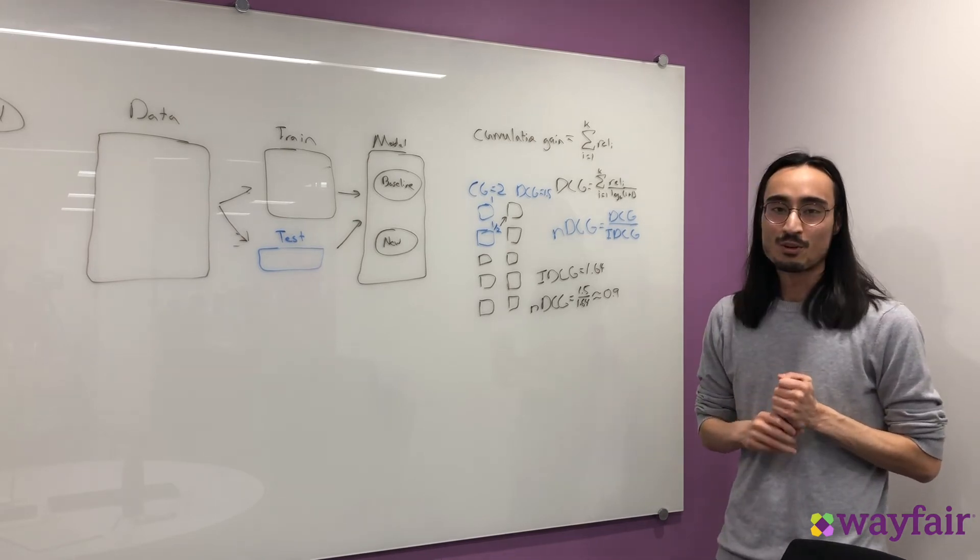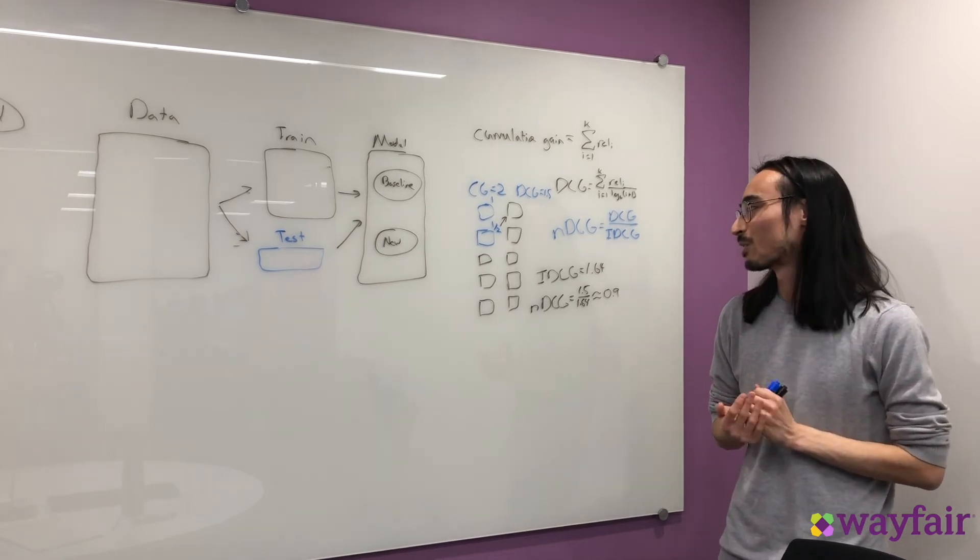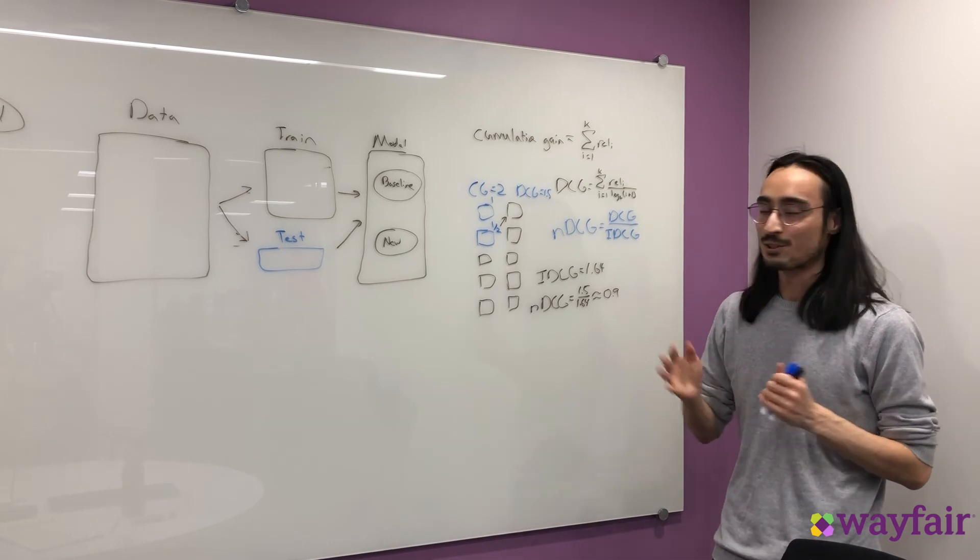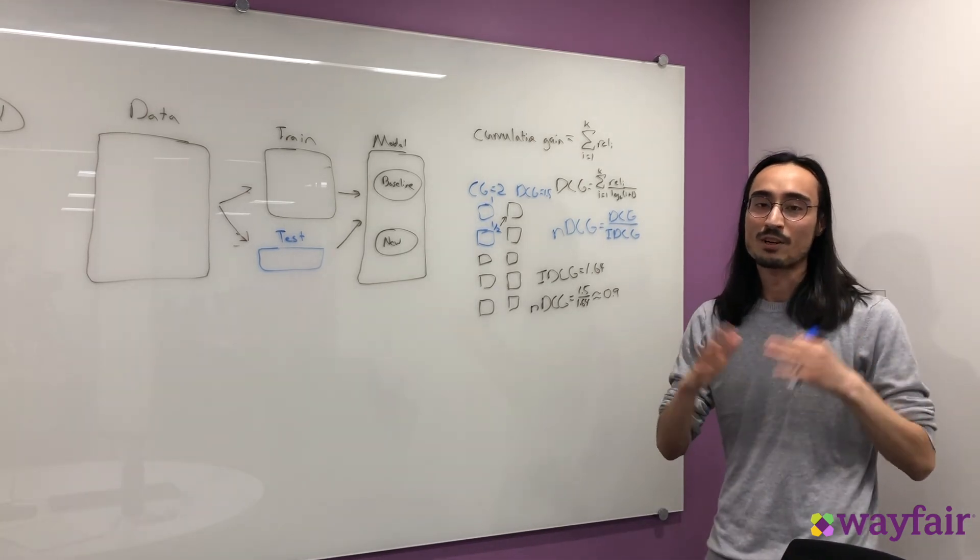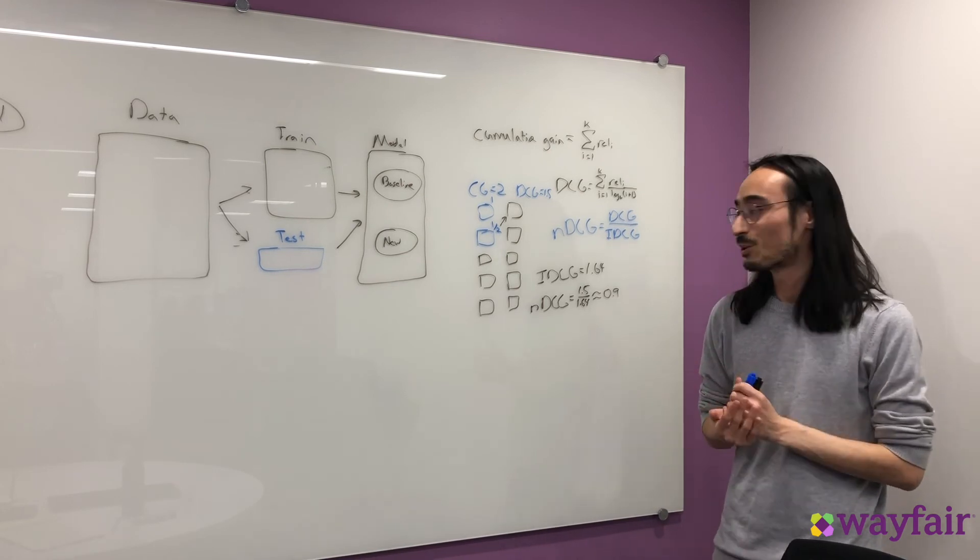So anyways guys, that's been an overview of NDCG for evaluating recommender systems. Obviously there's a lot of other valid metrics that you can use for recommender systems in the broader subject of information retrieval that I encourage you to explore.